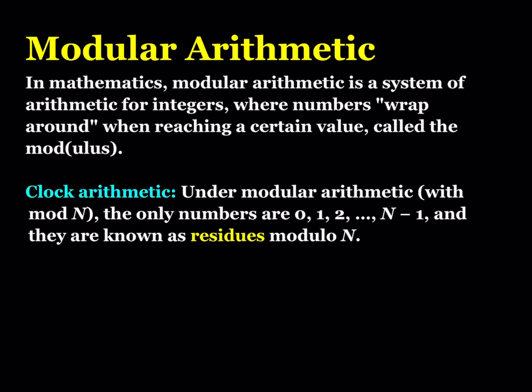Modular arithmetic is a system of arithmetic for integers where numbers wrap around a certain value, which is called the modulus. You can also define it as clock arithmetic if you think about the 12-hour or the 24-hour clock. Numbers wrap around and when you go to higher numbers they always repeat. These numbers are known as the residues modulo n.